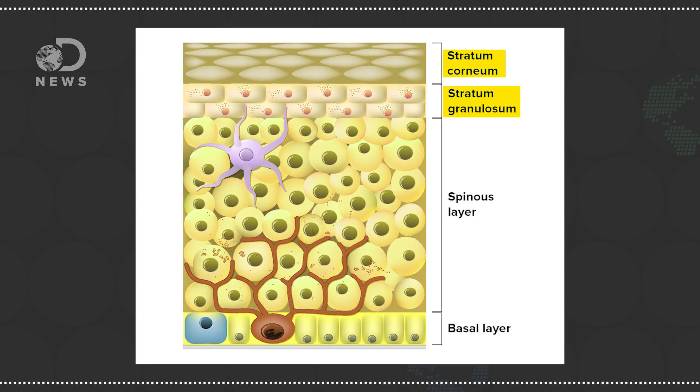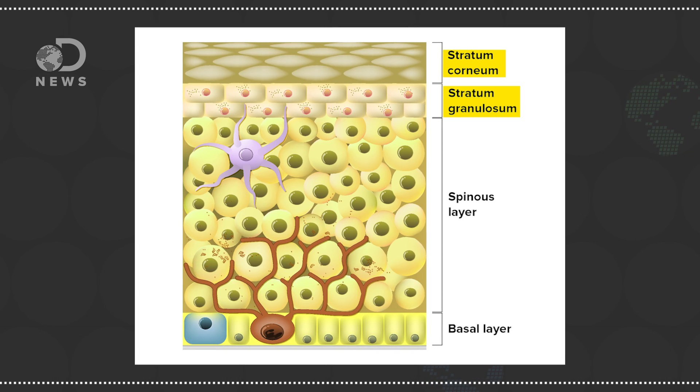Beneath that is a layer called the stratum granulosum, and that's where the no-leak magic happens. New research from 2016, published in the journal eLife, looked at skin cells in mice using highly specialized light-based microscopes, and cross-referenced against mathematical models to determine that the key to the skin's tight seal is actually its shape.